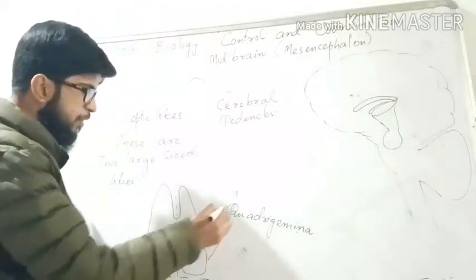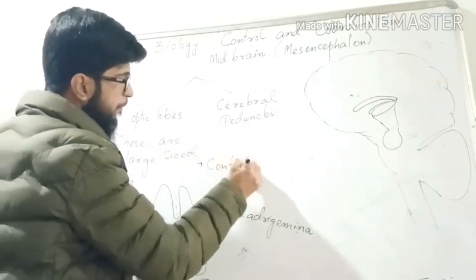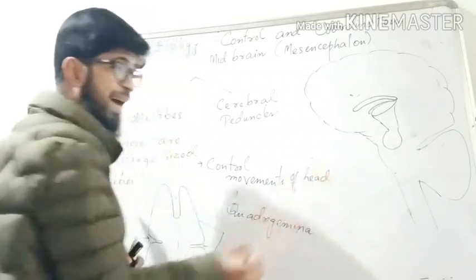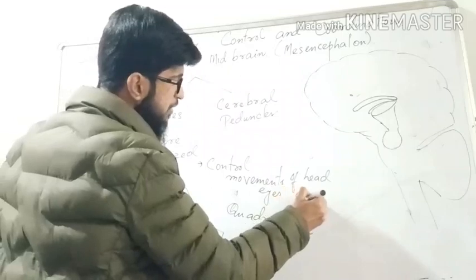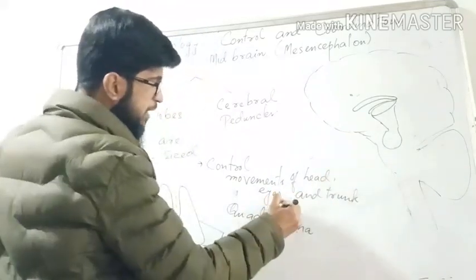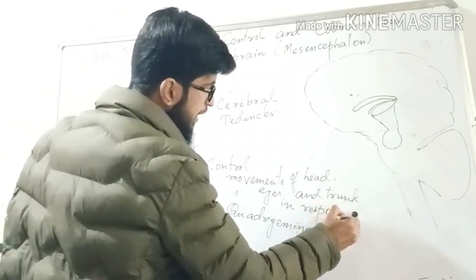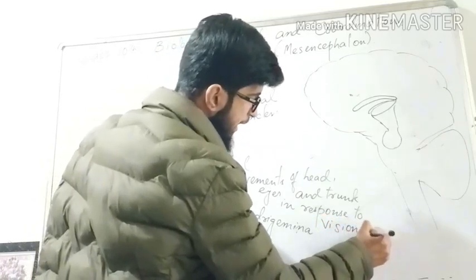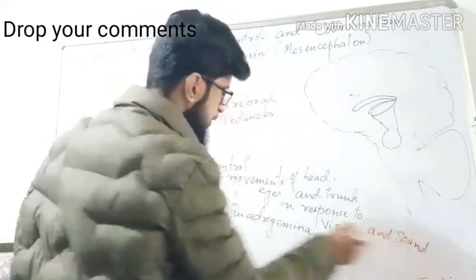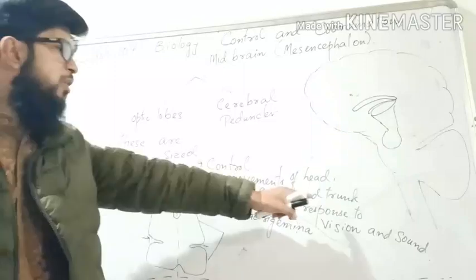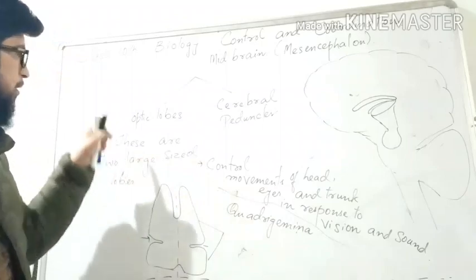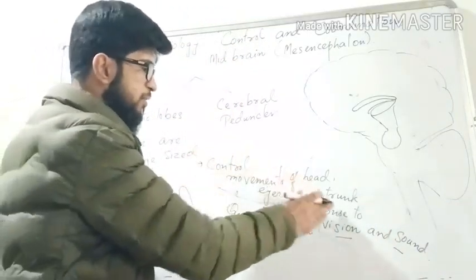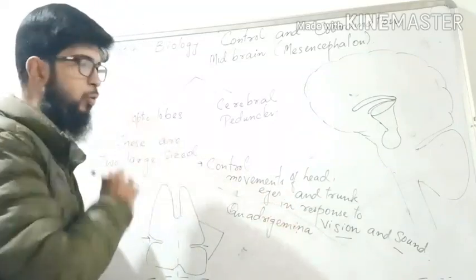The function of optic lobes: these optic lobes control movements of head, eyes, and trunk in response to vision and sound. So visual reflexes aur sound reflexes ko respond karte hue, jo movements hote hain of head, trunk, and eyes — they are controlled by the optic lobes.